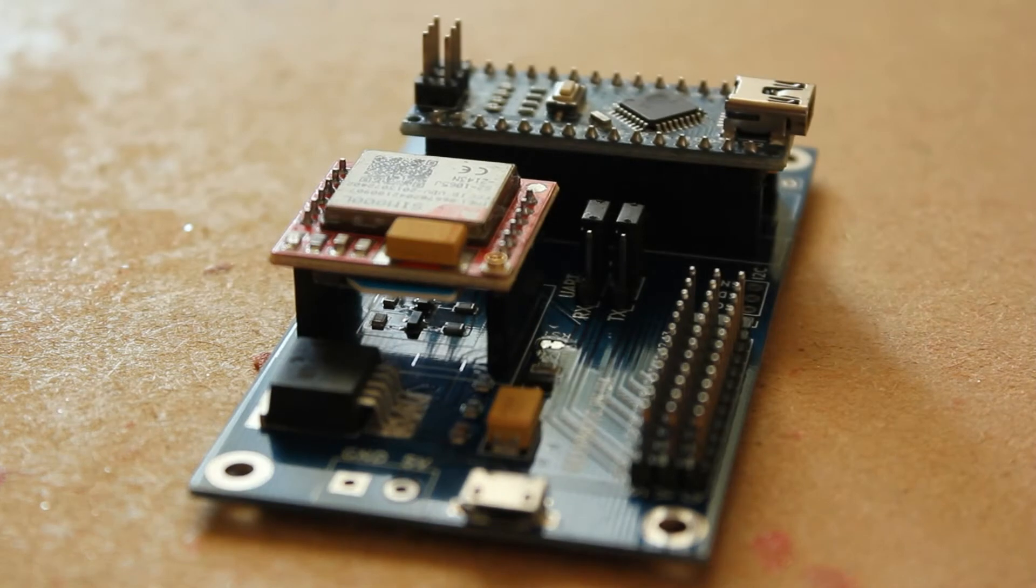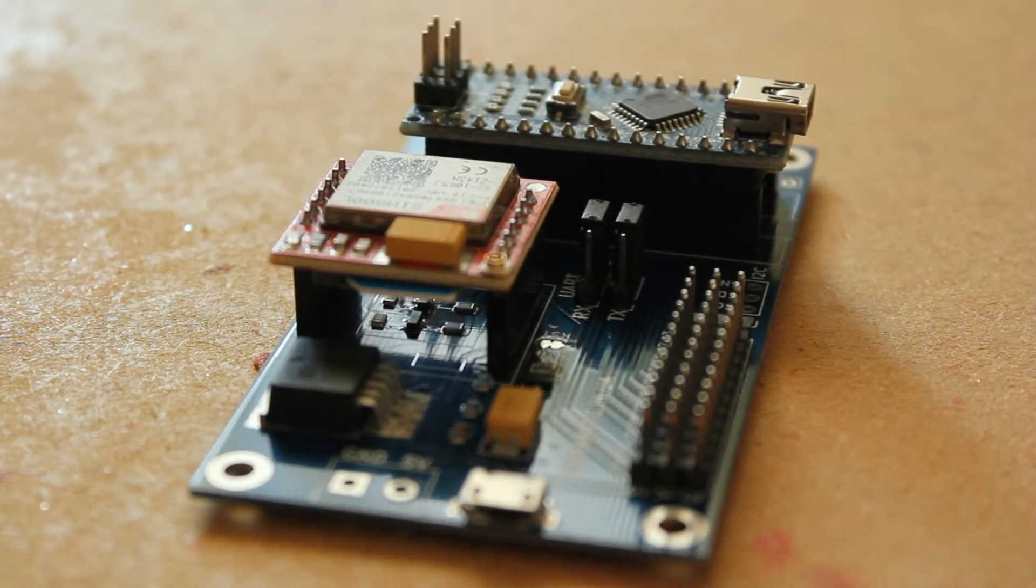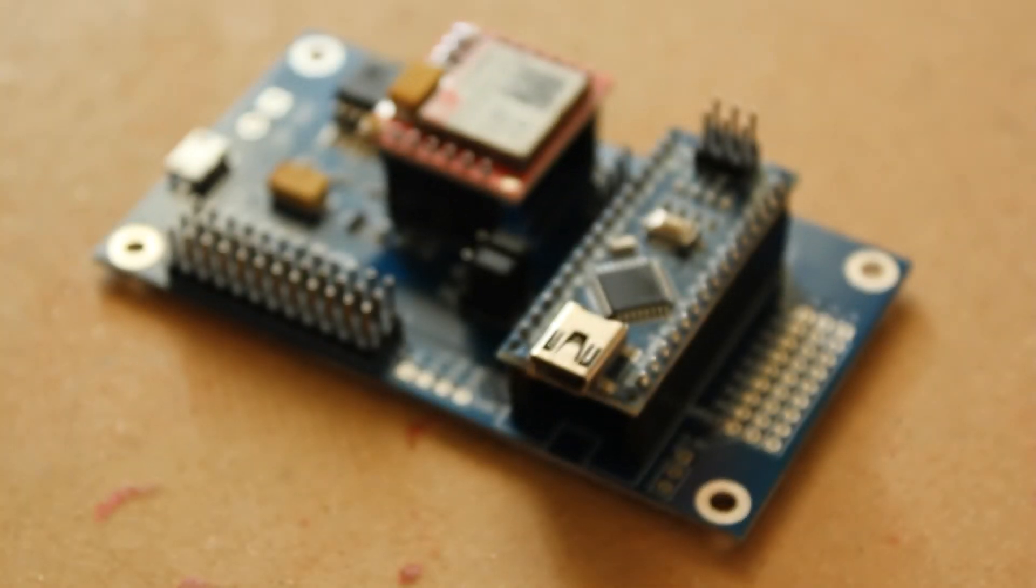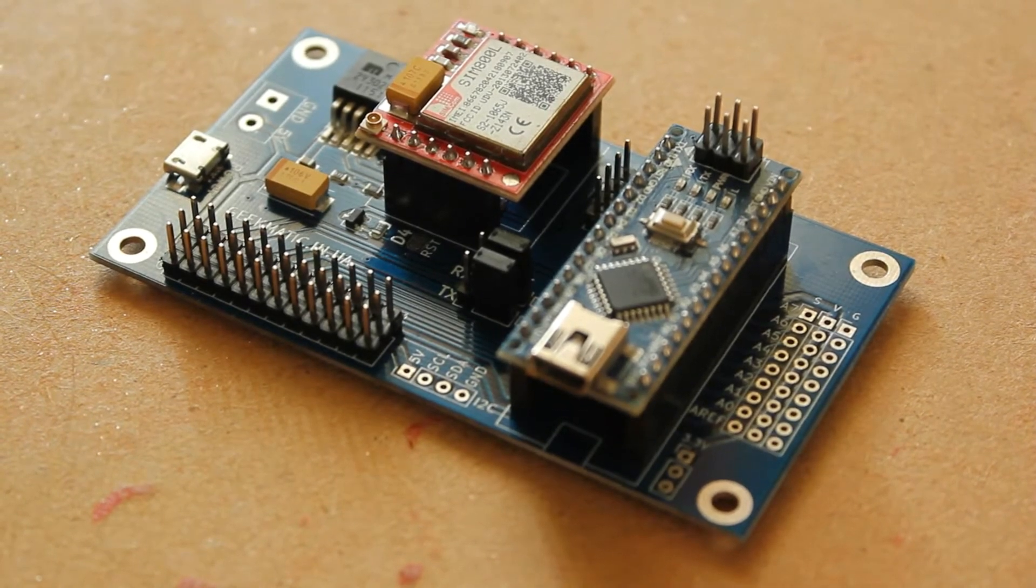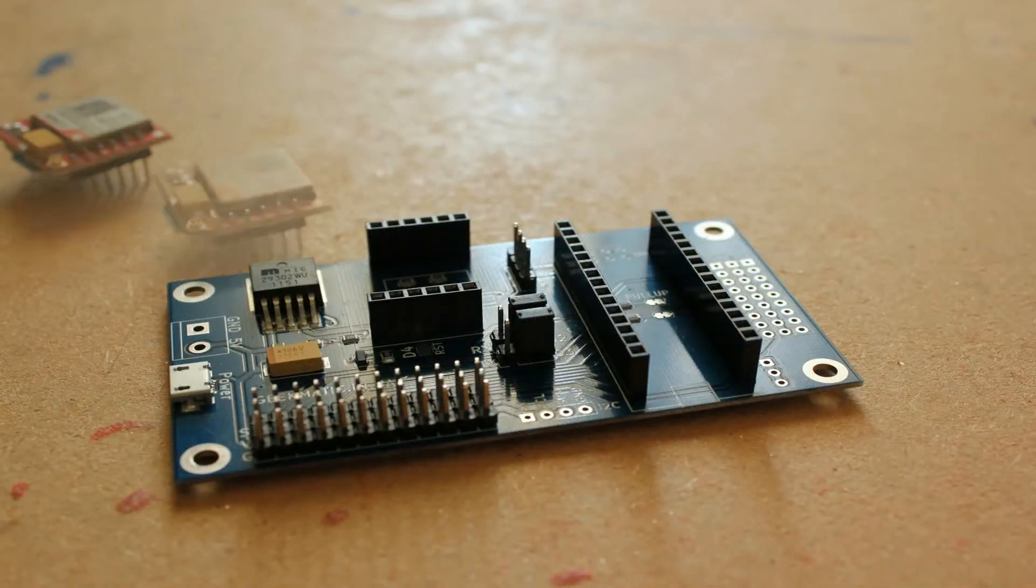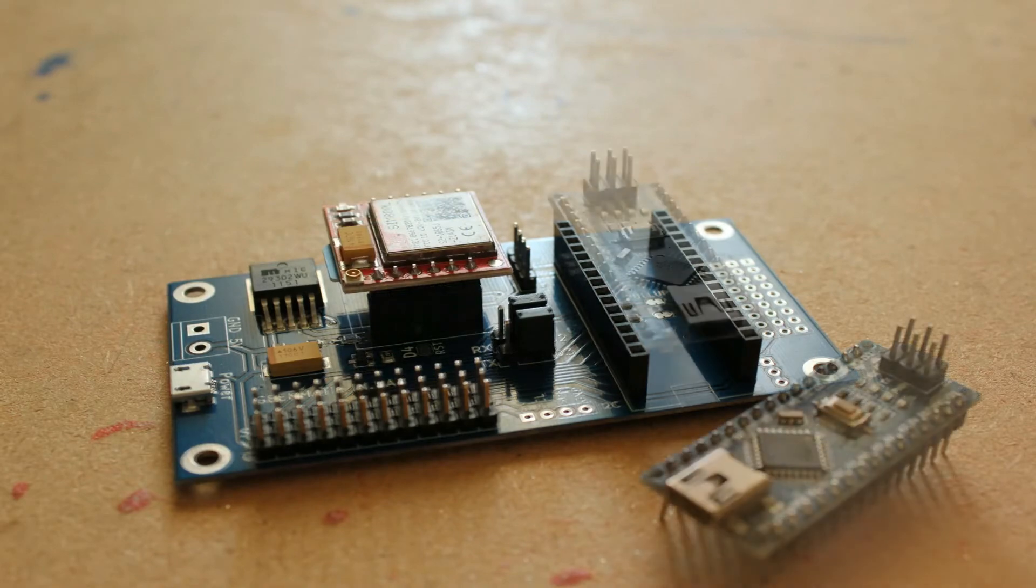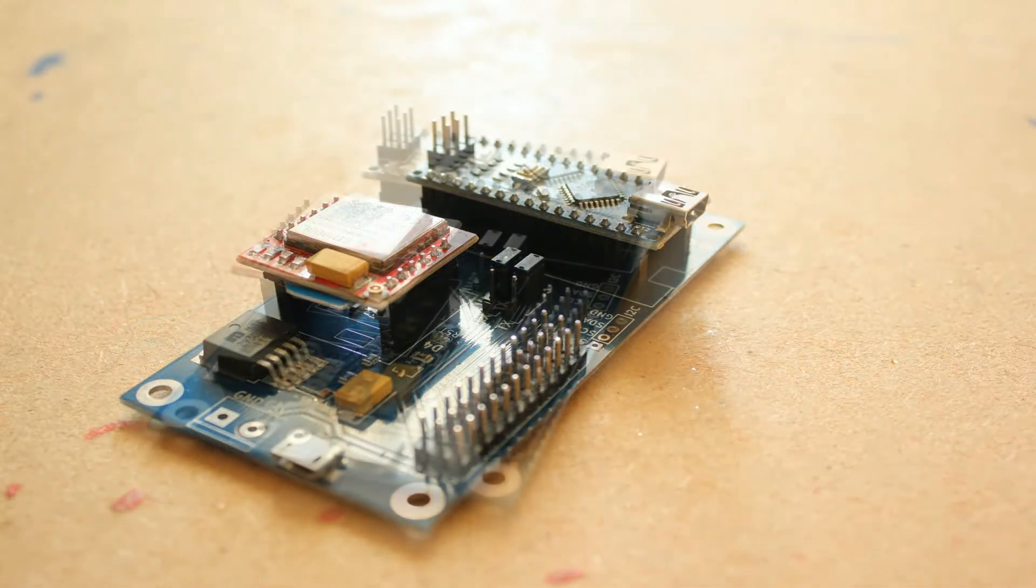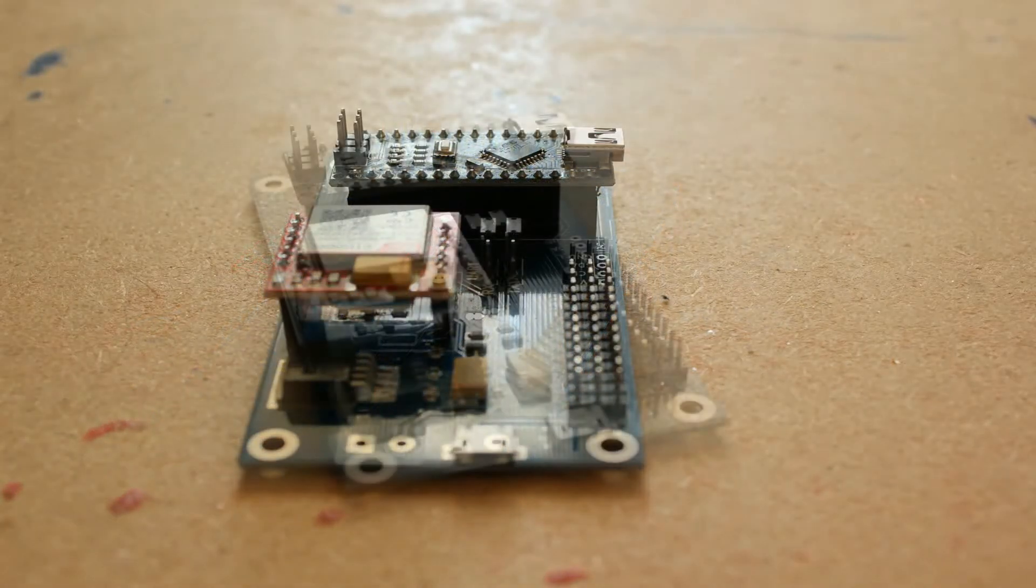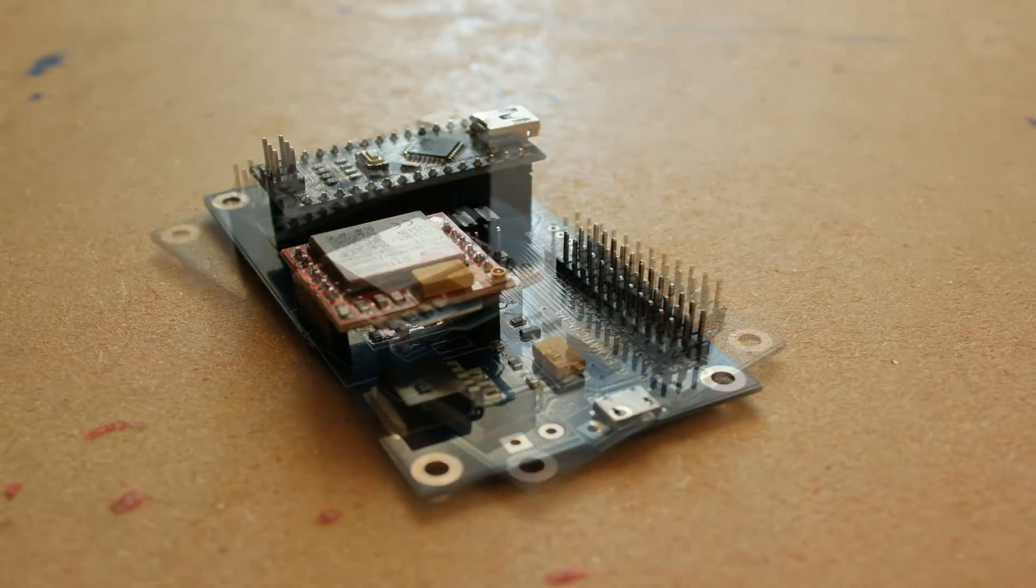For ease of installation and a quick transition to the software part of our conversation, I will take the most convenient shield for connecting Nano and SIM800. It already has a 4.2V stabilizer on board to power the GSM module, as well as two transistors for matching 5V and 3.3V signals. We developed it a couple of years ago and have already implemented one improvement at the request of customers.